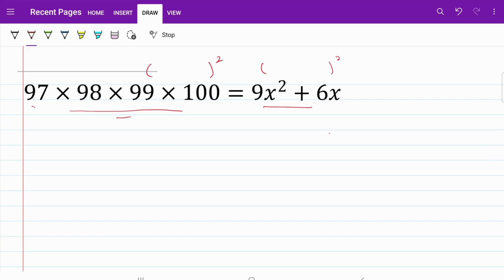Let's first take a look on the right-hand side. I have 9x square plus 6x. If I go ahead and do a plus 1 on this side, I can actually turn this into the format of a square plus 2ab plus b square. In other words, I can turn the right-hand side into 3x plus 1 square by simply adding a plus 1. So, mission accomplished, at least for the right-hand side.